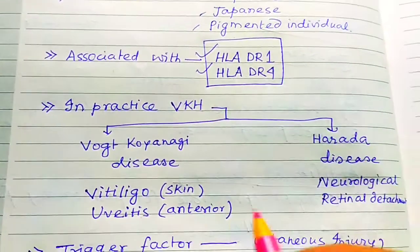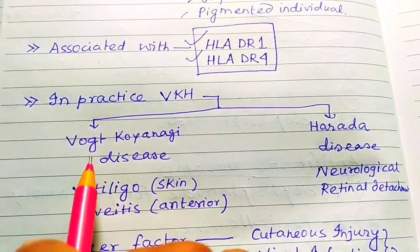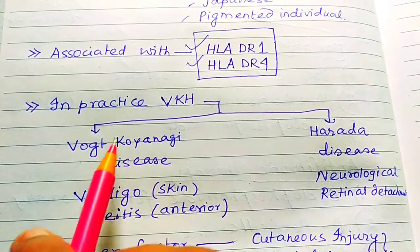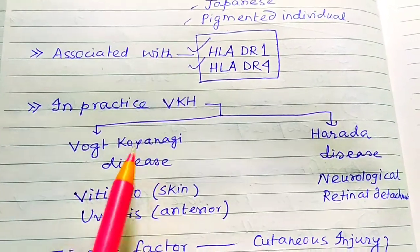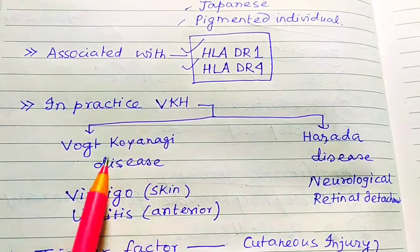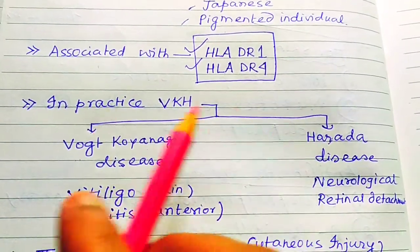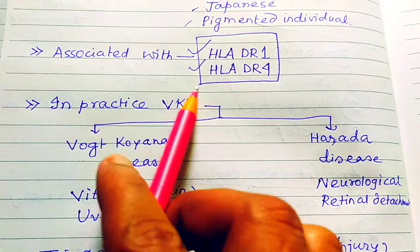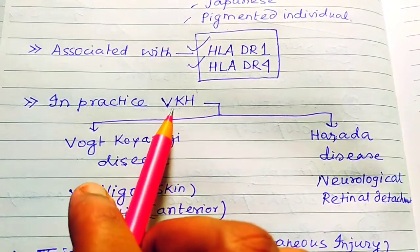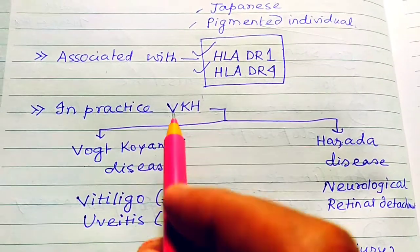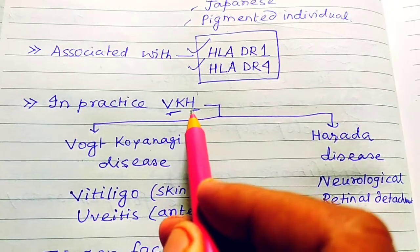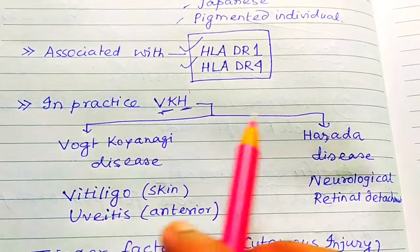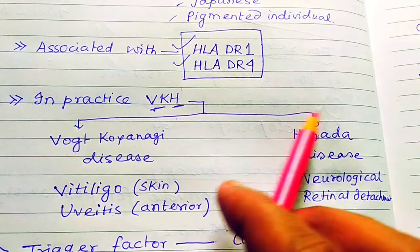In practice, we do not see the full VKH syndrome together. We get Vogt-Koyanagi disease and Harada disease as separate entities — VK and Harada separately.